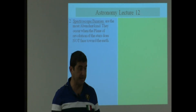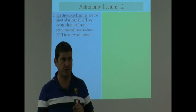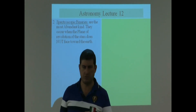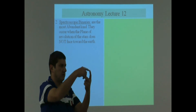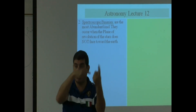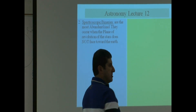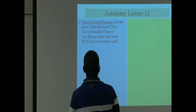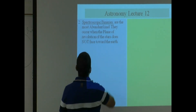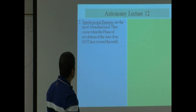Another kind is called spectroscopic binaries. These happen to be stars that are not far enough apart, so when we look through our telescope they look like a single star — but they're actually two stars going around each other. We study their spectral type to detect them. They are the most abundant kind of binaries. They occur when the plane of revolution of the stars does not face towards the Earth, so they don't eclipse each other.